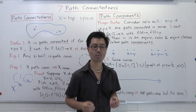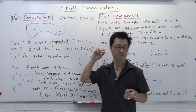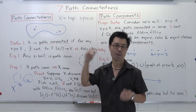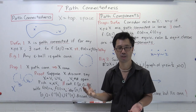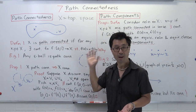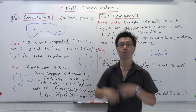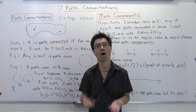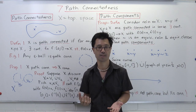Hi, I'm Daniel Chan from UNSW Sydney. This is video 7 in my short course on point set topology. In this video, I want to talk about the notion of path connectedness, which shows a different way of looking at the notion of connectedness.